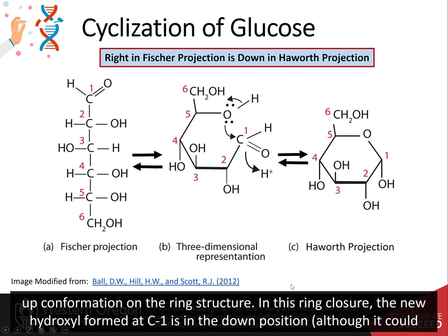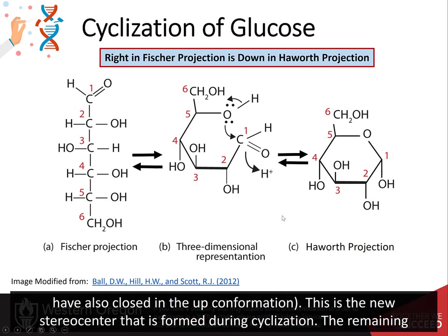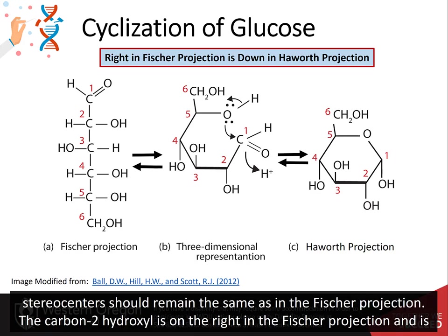In this ring closure, the new hydroxyl formed at the C1 position is in the down conformation, although it could have closed in the up conformation. This is the new stereocenter that is formed during cyclization. The remaining stereocenters should remain in the same position as in the Fischer projection.